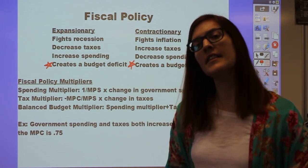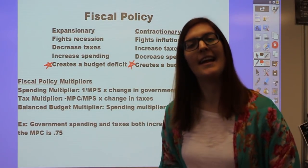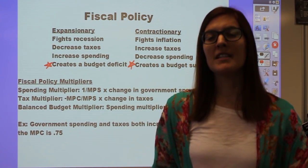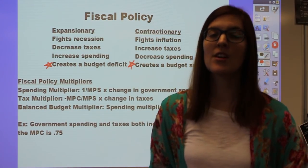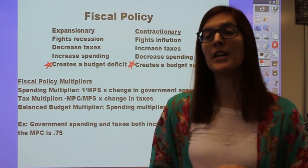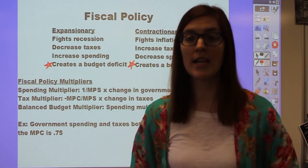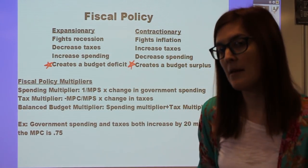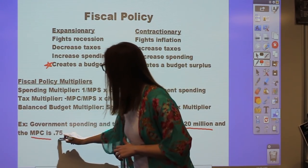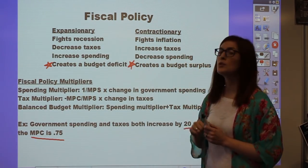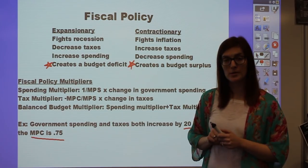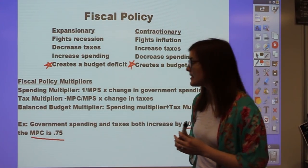The formulas use the abbreviations MPC and MPS—marginal propensity to consume and marginal propensity to save. MPC is how much of each additional dollar of income we consume; MPS is how much we save. We use these to determine how much GDP changes when fiscal policy changes. In the example, spending and taxes both increase by $20 million and MPC is 0.75. We can use the three multipliers to show how government spending and taxes each change GDP, and the overall effect.